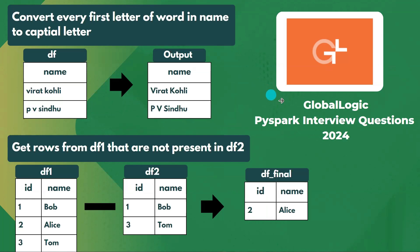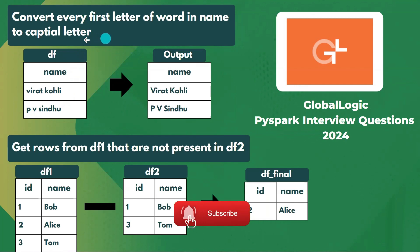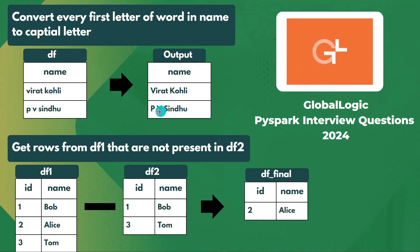Hello everyone, welcome back to the channel. In this video I'll be covering PySpark interview questions from Astronaut Global Logic. The first question: we have a dataframe with names like 'coli', 'pv sindhu' in small letters, and we need to convert the first letter of every word to a capital letter.